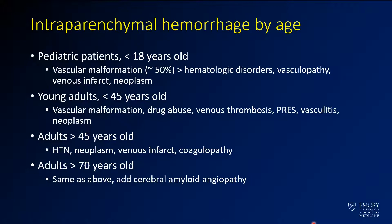For adults greater than 45 years old, you should think about hypertension, neoplasm, and coagulopathies. Similarly, for patients over 70, you should be thinking more about amyloid angiopathy, which typically occurs in patients over 70 or above.